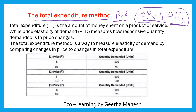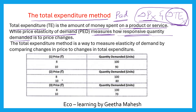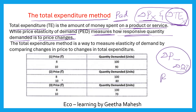Total expenditure is the amount of money spent on a product or service — that is what we call total expenditure. Price elasticity of demand measures how responsive quantity demanded is to a price change. Due to a change in price, there will be a change in quantity demanded, and price elasticity of demand explains this relationship.